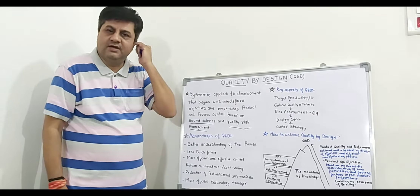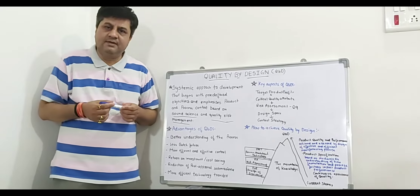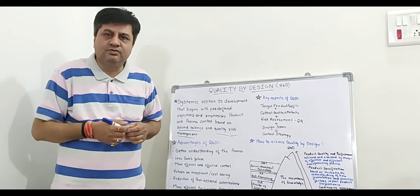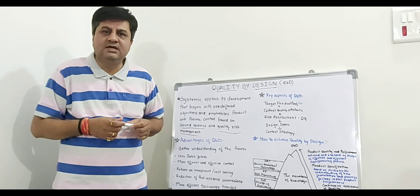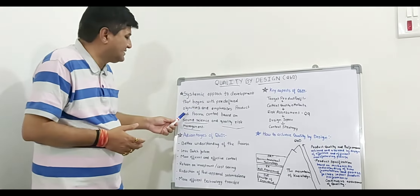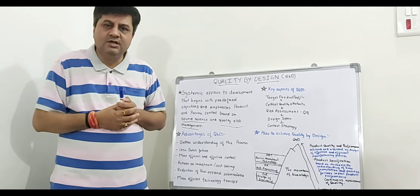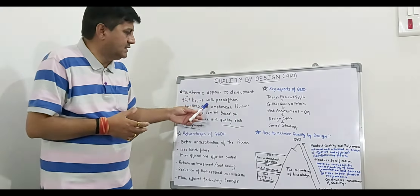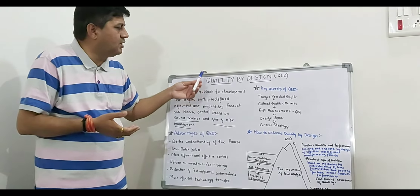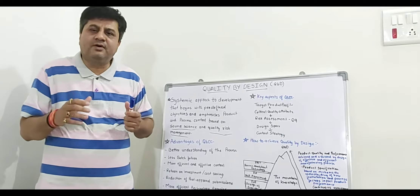Quality by Design is very important in pharmaceutical organizations. This is not a new concept — it is an old concept. This concept was first outlined by a very famous management guru known as Joseph Juran. According to Juran, quality could be planned with a systematic approach. According to ICH guideline Q8, quality could be built into the product by design.